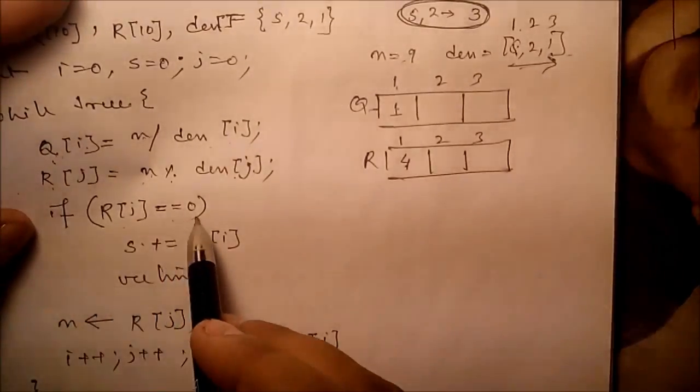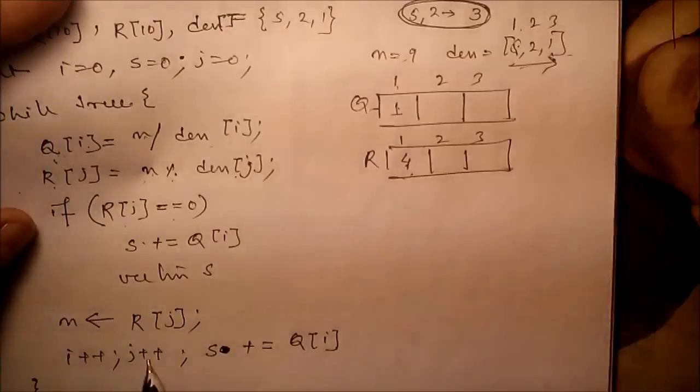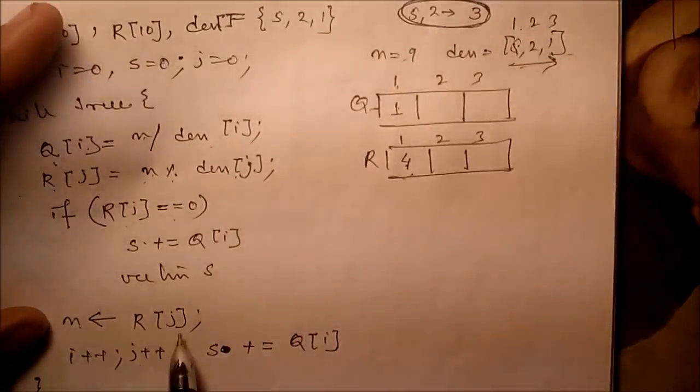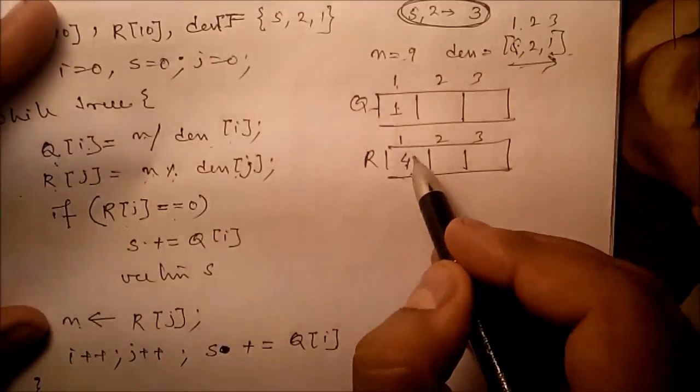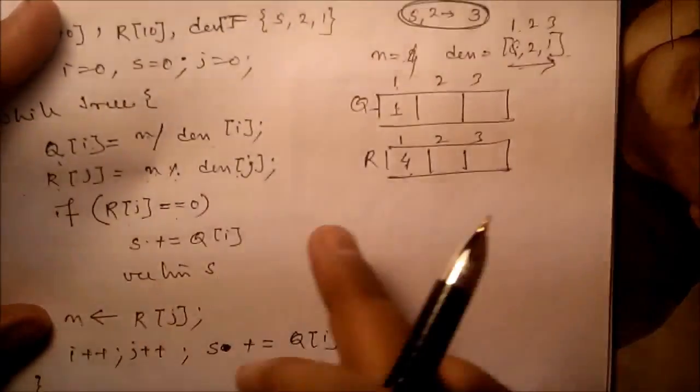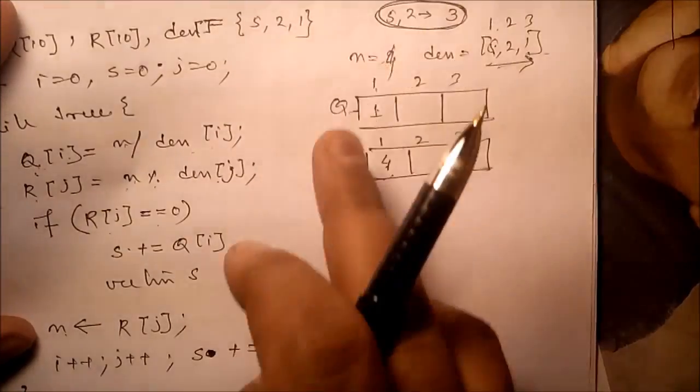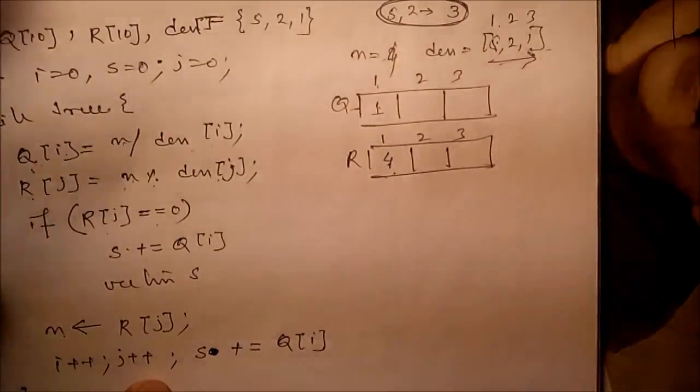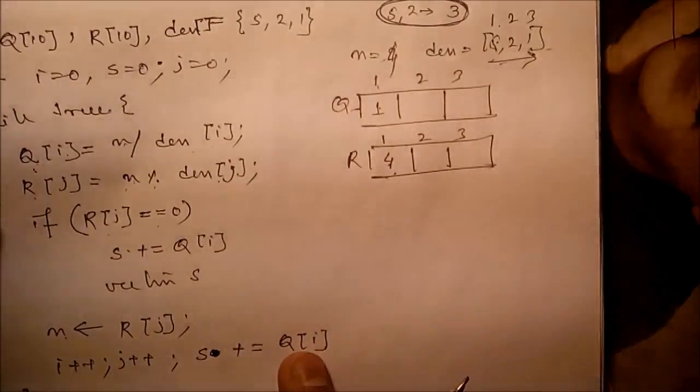Next, if r[j] equals 0 - no, r[j] is not equal to 0. N equals r[j]. Now here we have to return 4 rupees. R[j] to n, we have to return 4 rupees now. Increment i, increment s, and s equals s plus q[i].